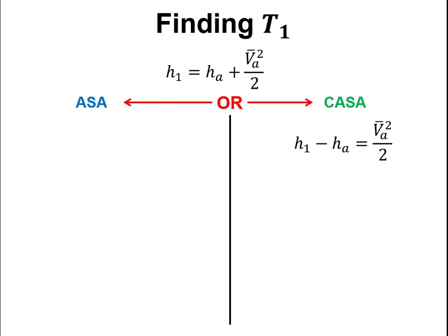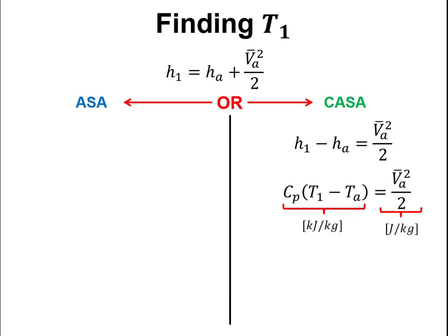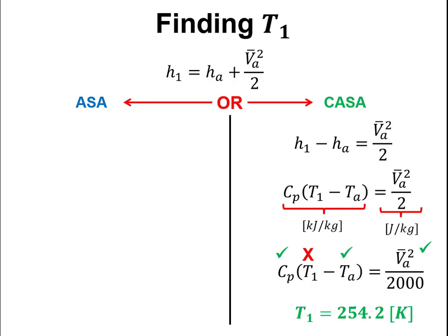For a cold air standard analysis, ΔH = C_p · ΔT. Notice the units: the kinetic energy term V²/2 gives joules per kilogram while C_p · ΔT gives kilojoules per kilogram, so divide the V² term by 1000. Knowing C_p, T_a, and V_a, I can find T1 = 254 K.